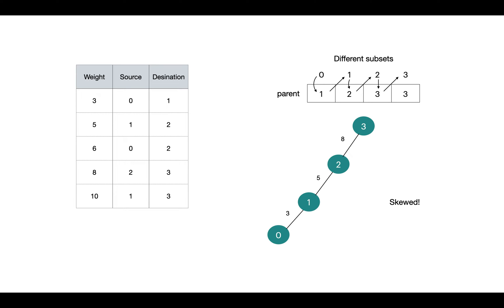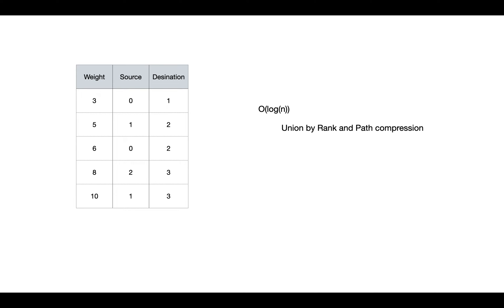So these approaches of find and union are naive, whose time complexity is linear. This can be optimized to order of log n or even smaller than that by path compression and union by rank techniques. Let's go through these optimizations as we will actually use them in Kruskal's algorithm.